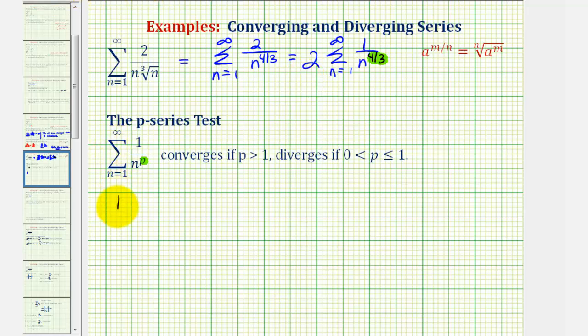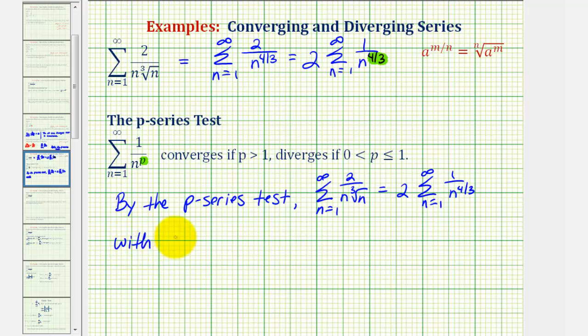So by the p-series test, the given infinite series, which is equal to 2 times the infinite series where a sub n would just be 1 divided by n to the four-thirds, with p equal to four-thirds, which is greater than 1, converges.